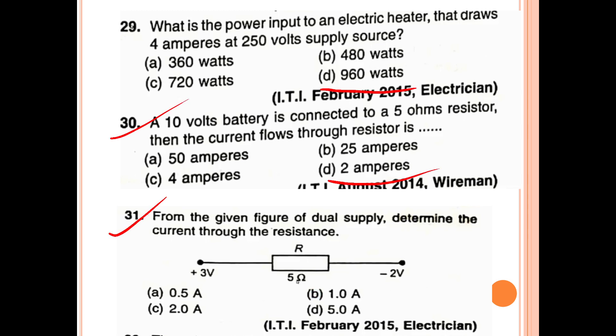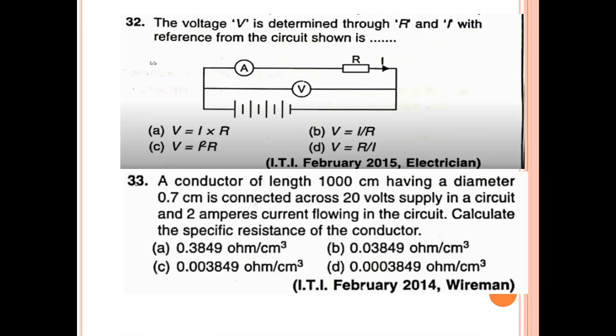31st question: From the given figure of dual supply, determine the current through the resistance. The voltage V is determined through R and I with reference from the circuit shown.